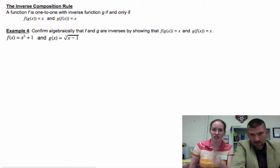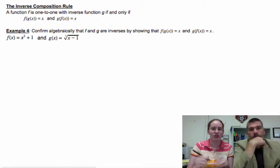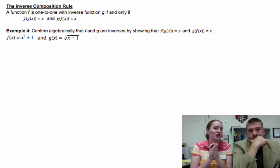A function f is one-to-one with inverse function g if and only if, when you compose them with each other, they end up simplifying to just be x. So f of g of x ends up being x, and g of f of x equals x.